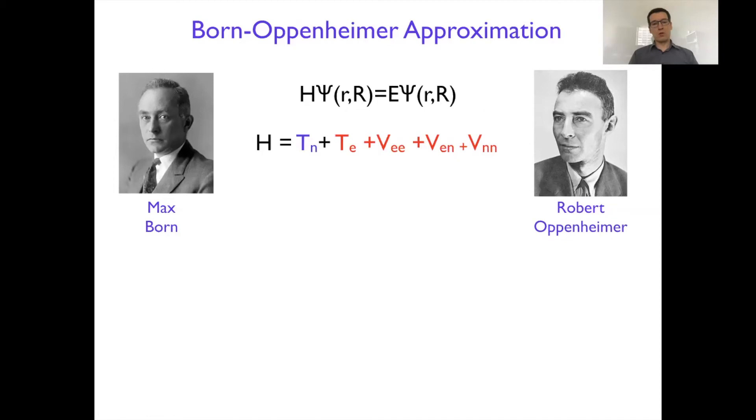What they did, they separated the total Hamiltonian into two parts, where essentially in the red, we have a part where you can freeze the electronic variables as parameters. And it contains the kinetic energy of electrons and then all Coulomb interaction between electrons and nuclei.